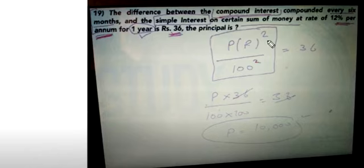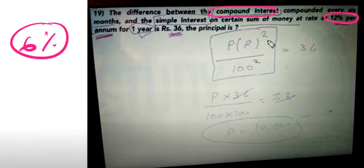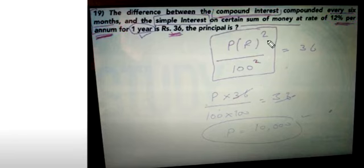The difference is between compound interest compounded every six months and simple interest at 12% per annum. When compounded every 6 months, the rate becomes 6% per 6-month period. So 12% per annum becomes 6% per 6 months.